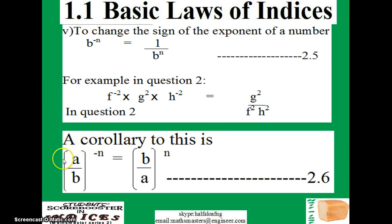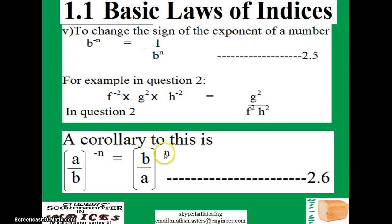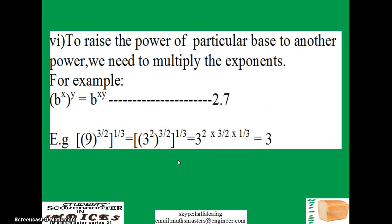We also have a corollary to this law, which is especially very beneficial for those who will be sitting for JAMB UTME. If you have (a/b) raised to power minus n, all you need to do is interchange the bases — a is in the numerator, make it the denominator, and b is the denominator, change it to the numerator. By doing that, the sign changes from negative to positive.